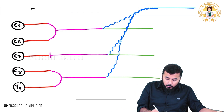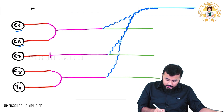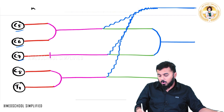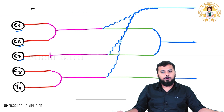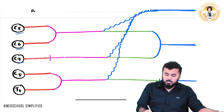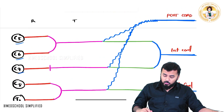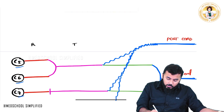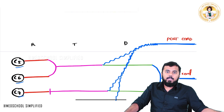All the posterior divisions join together to form the posterior cord. The anterior divisions of C5, C6, and C7 join together to form the lateral cord. The remaining anterior divisions form the medial cord. So we have three cords: posterior cord, lateral cord, and medial cord.